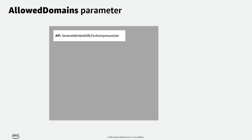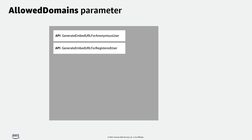Our embedding APIs are Generate Embed URL for Anonymous User and Generate Embed URL for Registered User. The first API — for anonymous users — is for when you don't want to manage users in QuickSight but still give an embedded experience. The second is for registered users when you are okay managing those users. When you have hundreds and thousands of users, the anonymous route makes more sense because you don't have to manage these users.